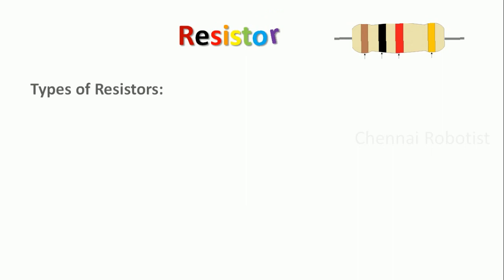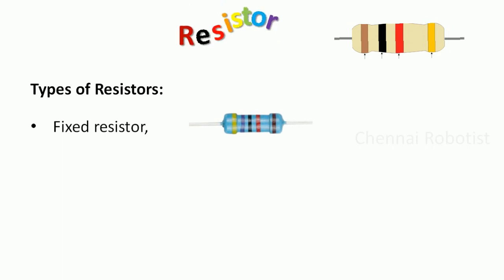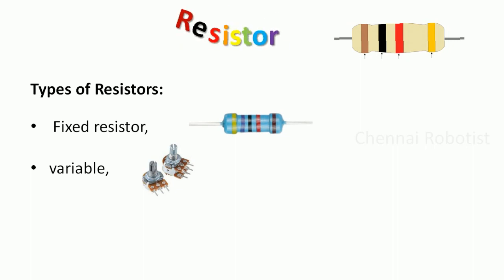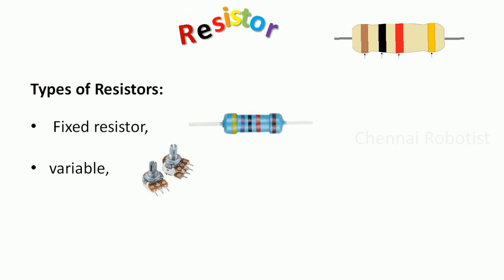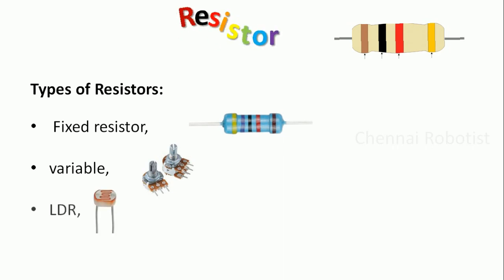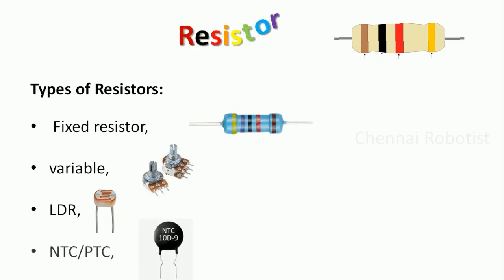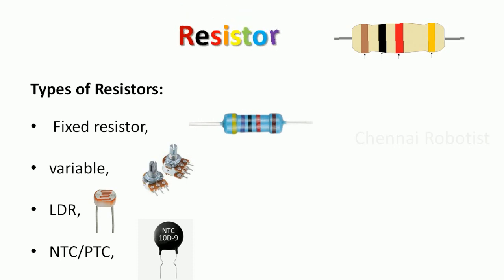There are different types of resistors. First is the fixed resistor, which is the most commonly used. Another type is the variable resistor, used in fan speed control or volume control where you tune a knob. Then there is the LDR — Light Dependent Resistor — whose resistance changes proportionally with the light falling on it. Finally, NTC and PTC resistors are used for measuring temperature.